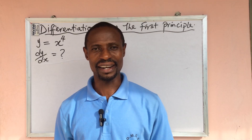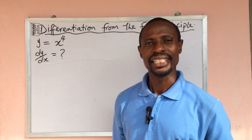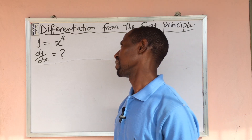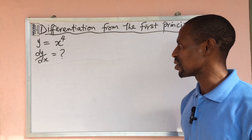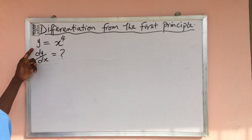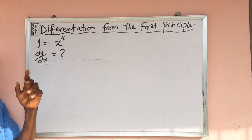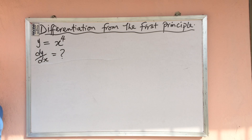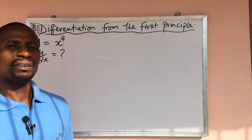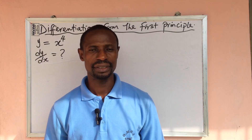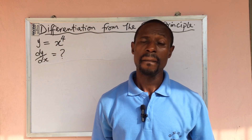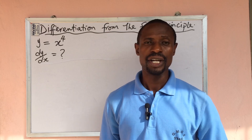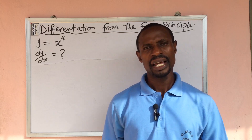Welcome everyone to my channel. Today we have a question on the board on differentiation from the first principle. The first term is y equal to x to the power of 4, and dy/dx will be equal to what. I've dropped some videos on differentiation using the formula method, but today we want to look at how we can differentiate a function from the first principle.